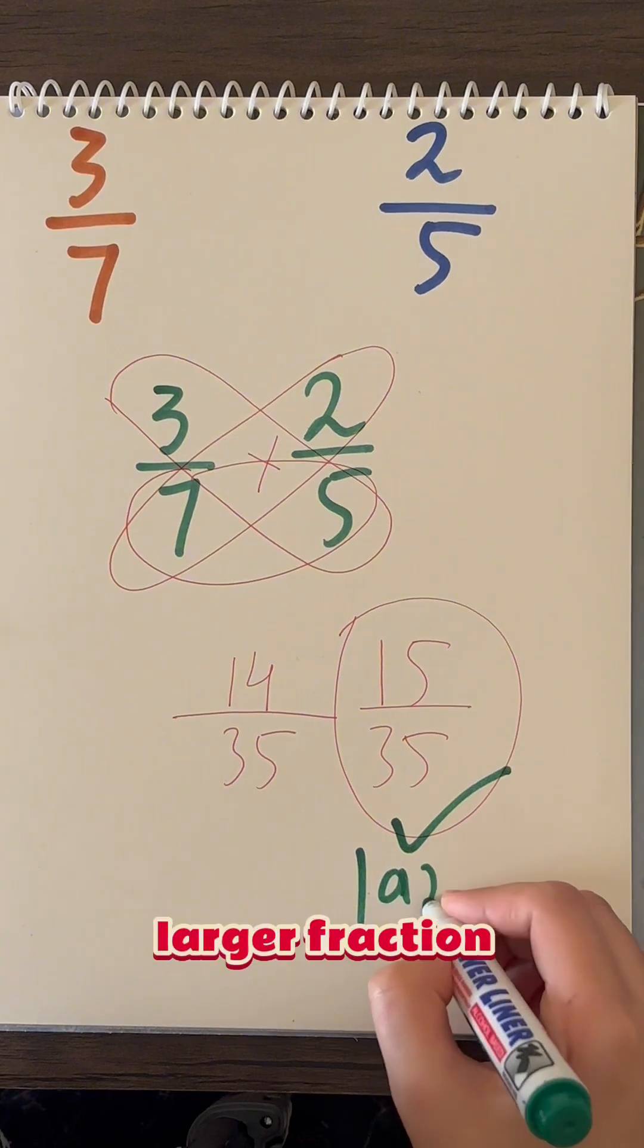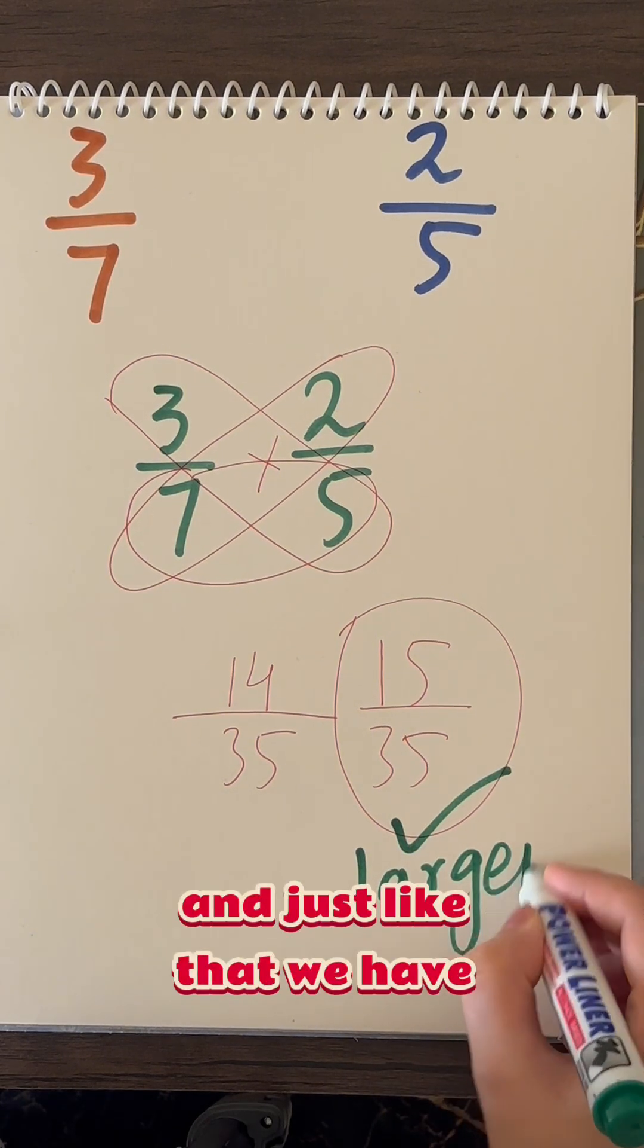So 3/7 is the larger fraction. And just like that, we have cleared fractions lesson.